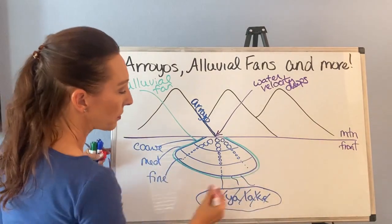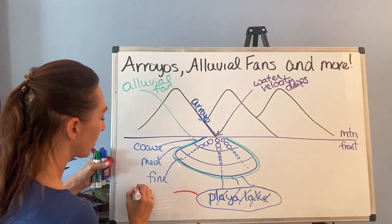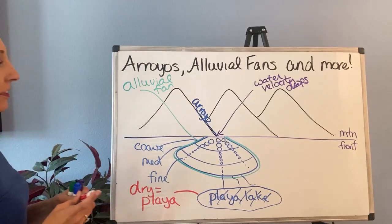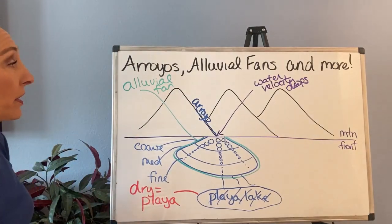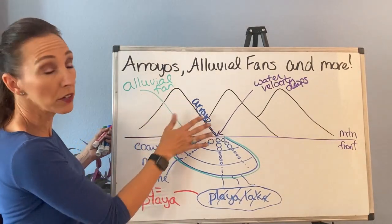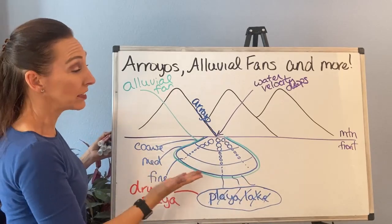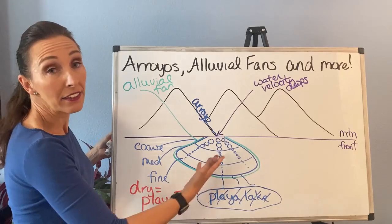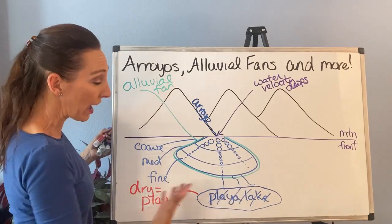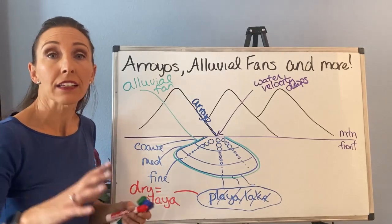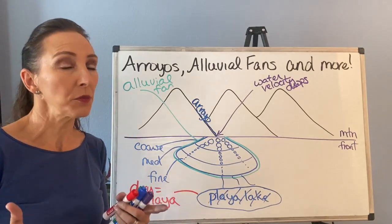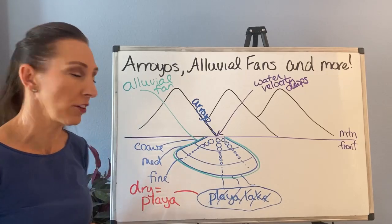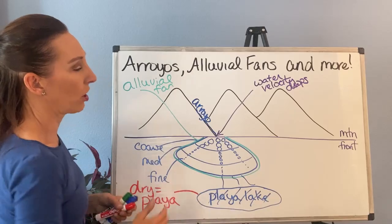So the wet version is a Playa Lake, and when it dries, the dry version is a Playa. That's the relationship between them. We have material carried by the arroyo, dumped out when it loses velocity to form an alluvial fan. Then as the water continues to collect somewhere and dry out, we get evaporites — the water evaporates away, leaving salts behind, and maybe some mud, silt and clay. That would be our Playa.